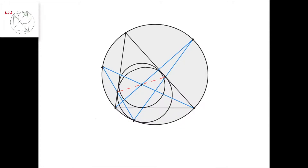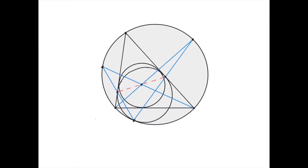Then we take the line defined by this point and this point, and we know that it must intersect the circumcircle at the point that is the midpoint of this arc defined by the chord. Therefore, this angle bisector and this line here intersect the circumcircle at the same point — the midpoint of this arc.